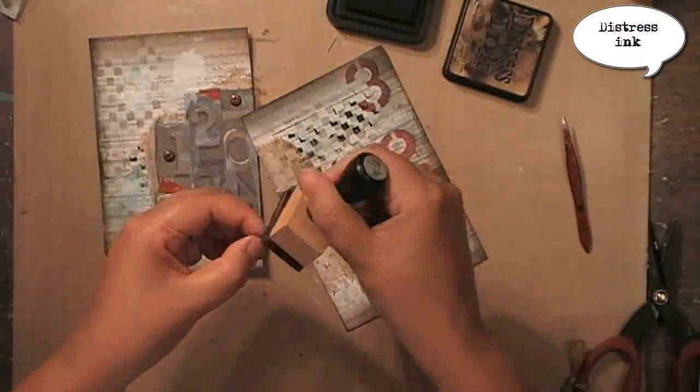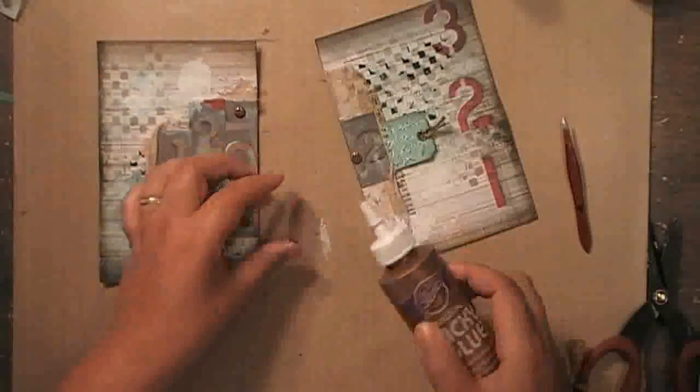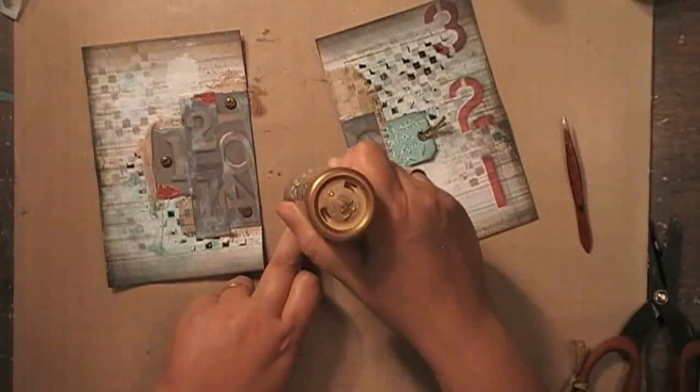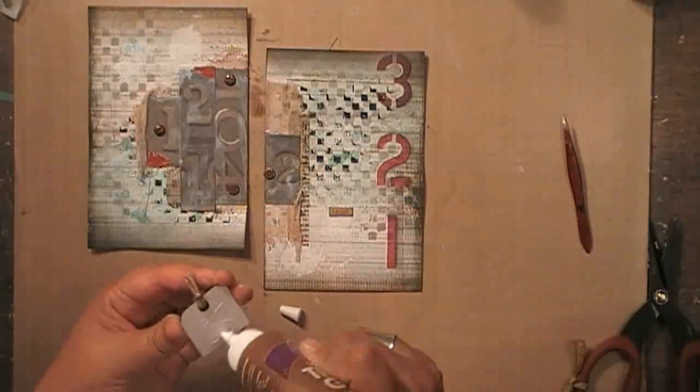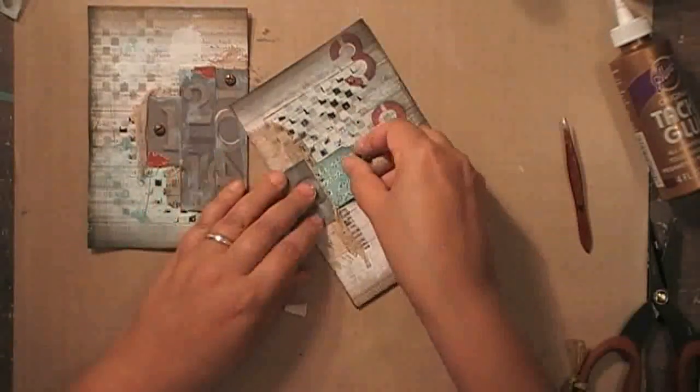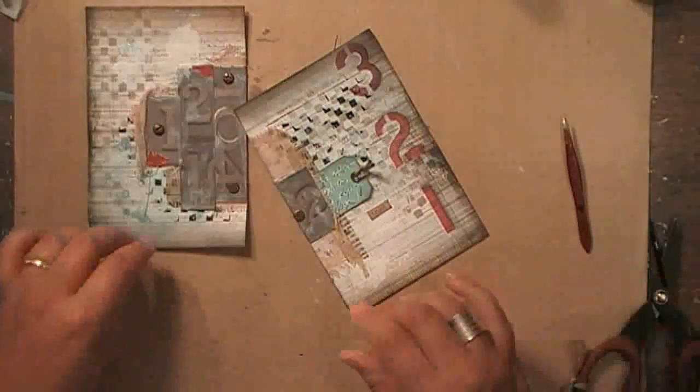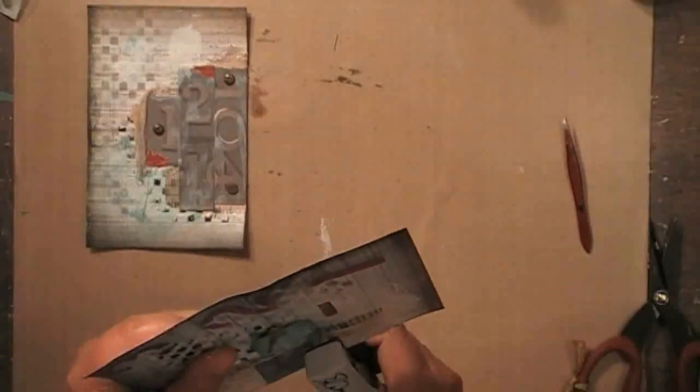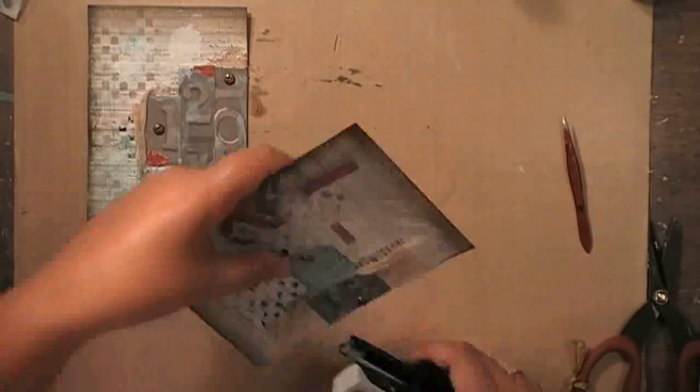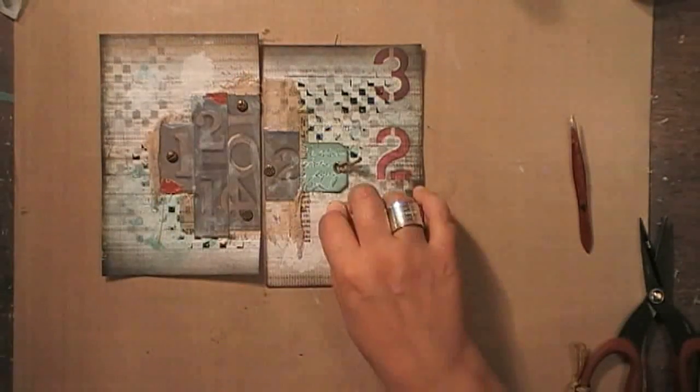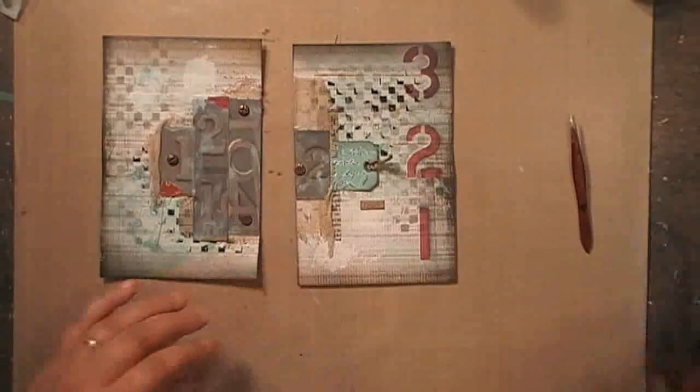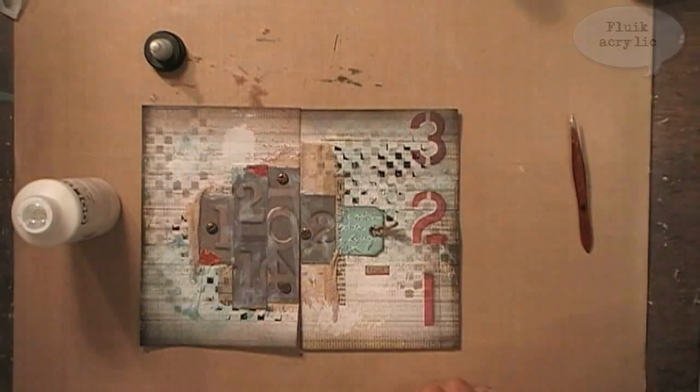I chose a chitchat sticker from Tim Holtz to add one more word to my spread, and after adding some distress ink on the edges, I'm gluing it down. And now I can also glue down my tag, and as there is quite some volume due to the eyelet and the piece of rope, I'm using my mini attacher.